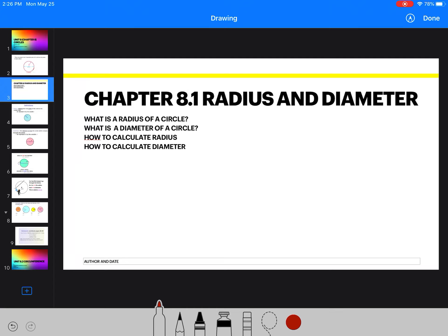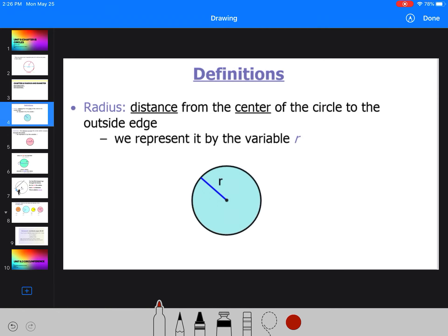So this first section, chapter 8.1, radius and diameter, we're going to look at what is a radius, what is the diameter of a circle, how to calculate radius, and how to calculate diameter. So you might have a little bit of an inkling, but hopefully this solidifies it in your head.